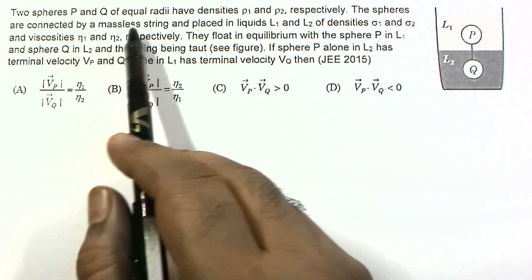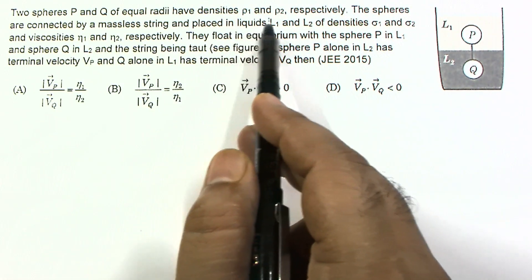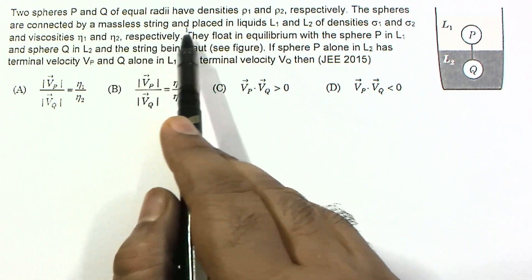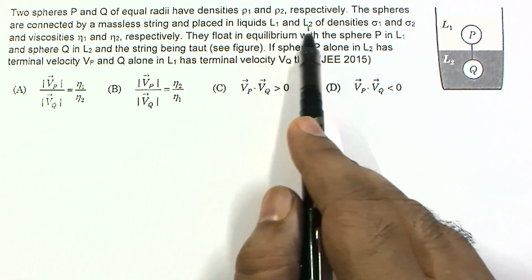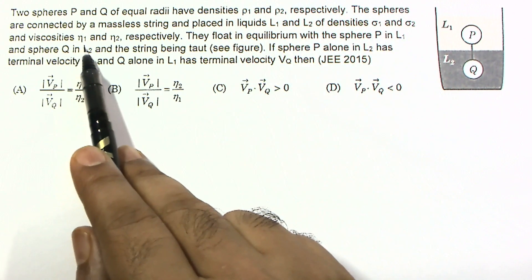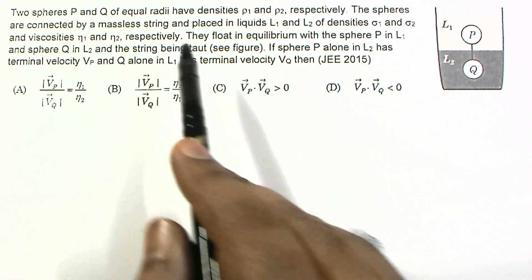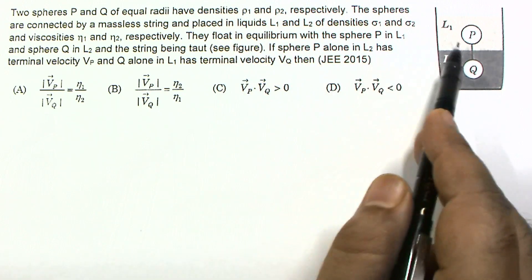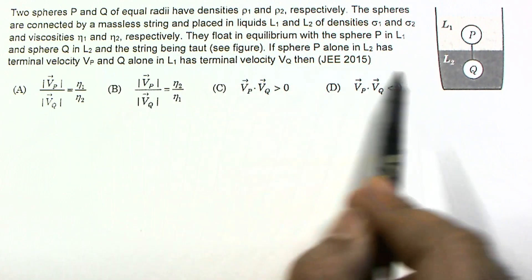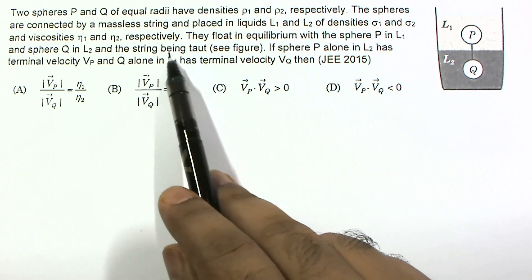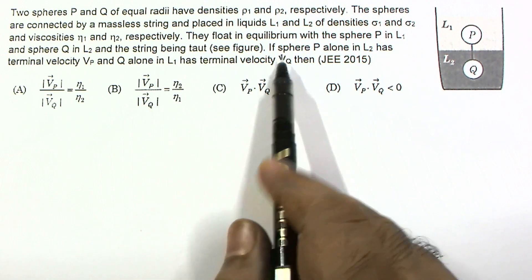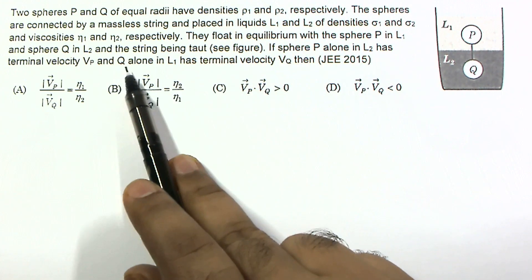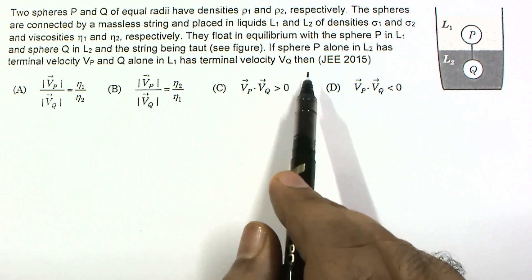In this question, two spheres P and Q of equal radii have densities ρ1 and ρ2 respectively. The spheres are connected by a massless string and placed in liquids L1 and L2 of densities σ1 and σ2 and viscosities η1 and η2 respectively. They float in equilibrium with sphere P in L1 and sphere Q in L2, with the string being taut.